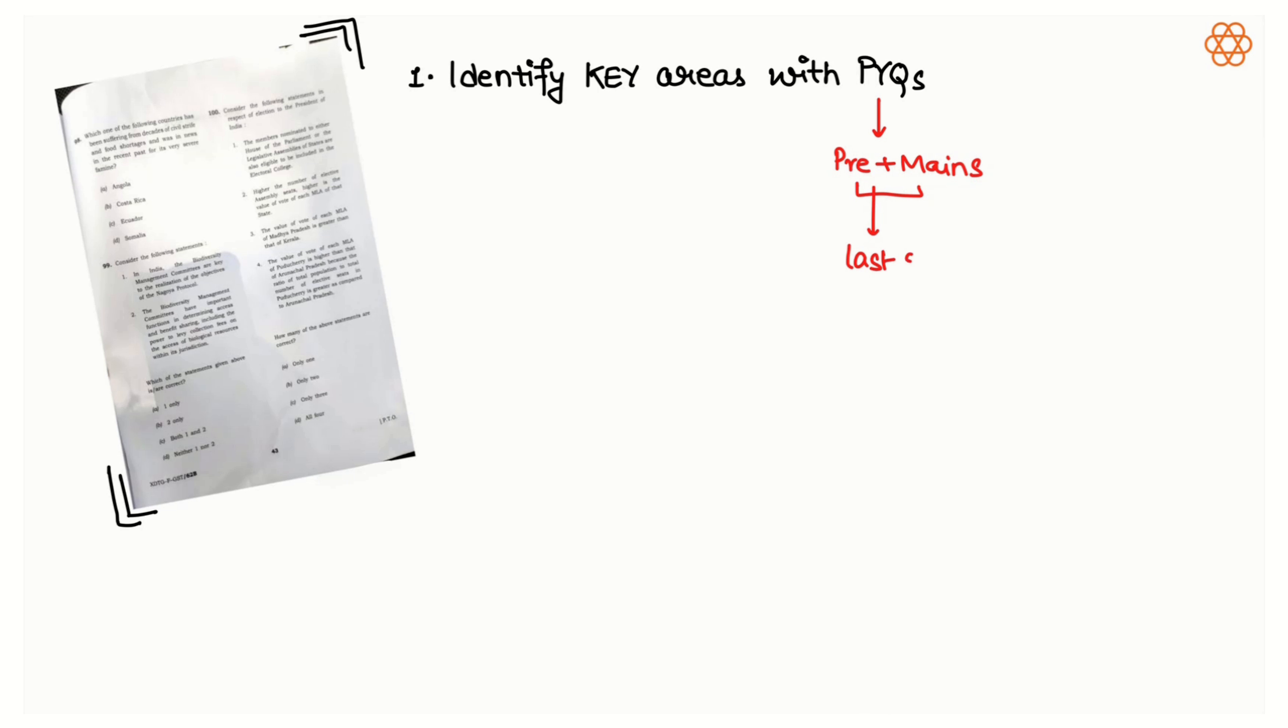The first step is to have both prelims plus mains previous year questions of the last five years. When you have your previous year questions, the second step is to identify the key areas, meaning the questions or the topics which have been repeated.